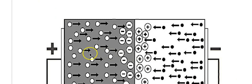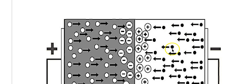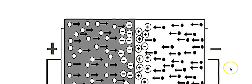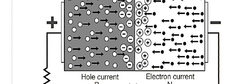Here is the P side and here is the N side. The P side contains a large number of majority carriers, which are holes. The N side has a very large number of majority carriers, which are electrons. In between there is a depletion region where there are ions. When we make the P-N junction forward biased, the thickness of this depletion region decreases and becomes very thin.